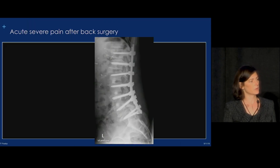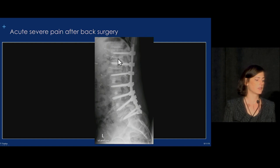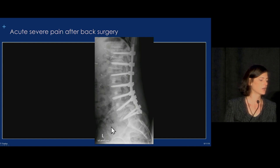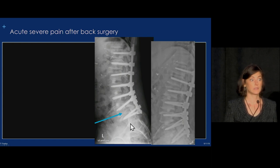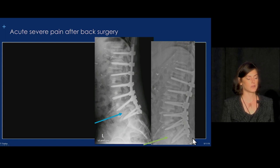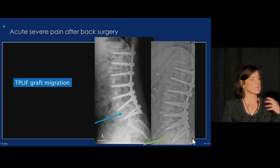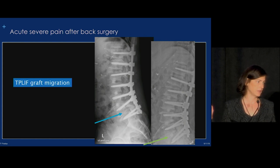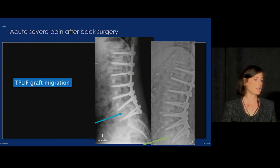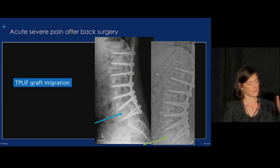Let's briefly talk about some spinal emergencies. This patient presented with acute back pain after surgery. Examining all the hardware carefully, we can see interbody grafts at multiple levels. One interbody graft appears out of position. Comparing to the first postoperative study confirms this is graft migration — it was in expected position immediately after surgery. The key with spine surgery patients is to go back to the first postoperative radiograph and compare, because complications can develop over time and be difficult to find if you're only comparing to the one-month prior study.